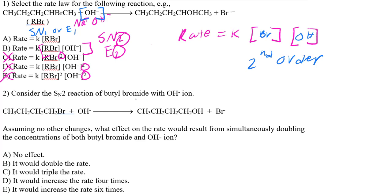Consider the following reaction of butyl bromide with OH — same reactant. Now, assuming no other changes, what effect results from simultaneously doubling the concentration of bromide and OH? If we double both, that's 2 times 2, which is 4. So the answer would be D: the rate increases by a factor of 4.